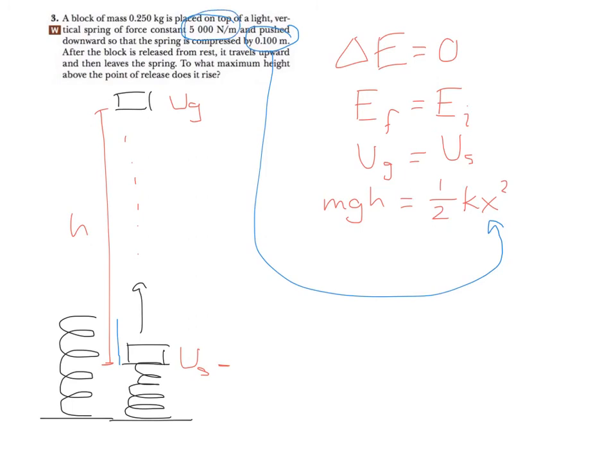The spring constant is that 5,000 newtons per meter. The mass is 0.25 kilograms. And, of course, G is G, so the only thing you don't know is H. So assuming that you plug everything in correctly, you should be able to roll forward and get the right answer. Alright, on to the next question.